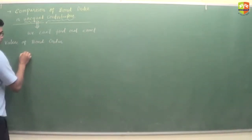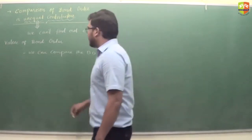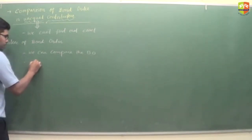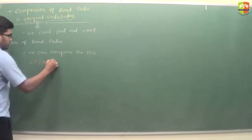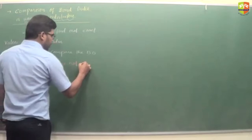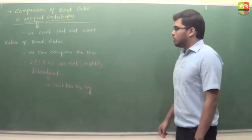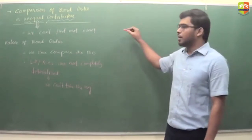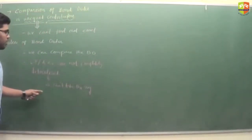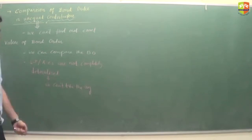We can only compare the bond order. The reason is that the lone pair or pi electrons are not completely delocalized. In the case of equal contributors, we simply calculated the number of pi bonds and sigma bonds divided by the total number of resonating structures — that is, the average value. But here we cannot take the average since the electron pairs are not completely delocalized.